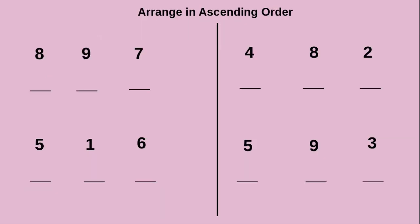Now we will see some more examples. How to arrange these numbers in ascending order? They have given 8, 9, 7. Ascending order means arranging the numbers from smallest to greatest. The smallest number here is 7, so we write 7 first. Next smallest is 8, and at last 9. Now we have arranged these numbers in ascending order.